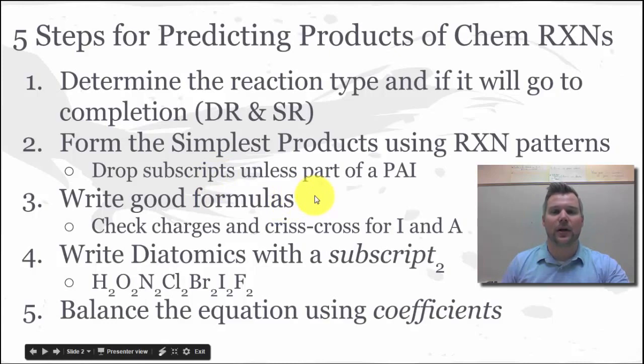Our third step would be to write good formulas for ionic compounds. That means checking your charges and if need be crisscross those charges into subscripts, reduce those formulas down if need be.